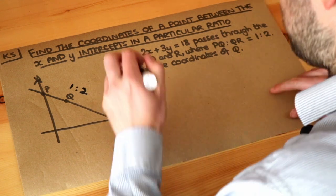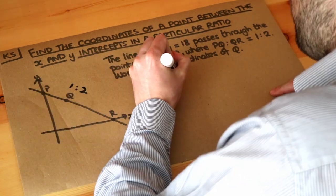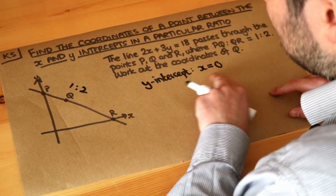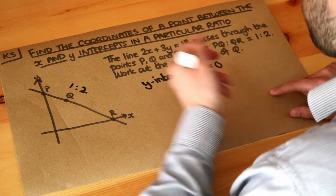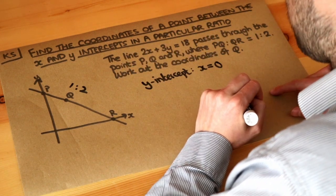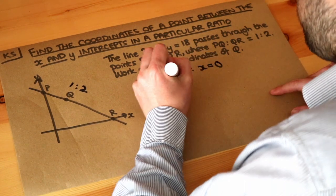Now in previous videos, we've seen to find the y-intercept, when we're on the y-axis, the x value is 0. And if that's not familiar to you, please look at my video on how you find the intercepts, the x and y intercepts, of a straight line.